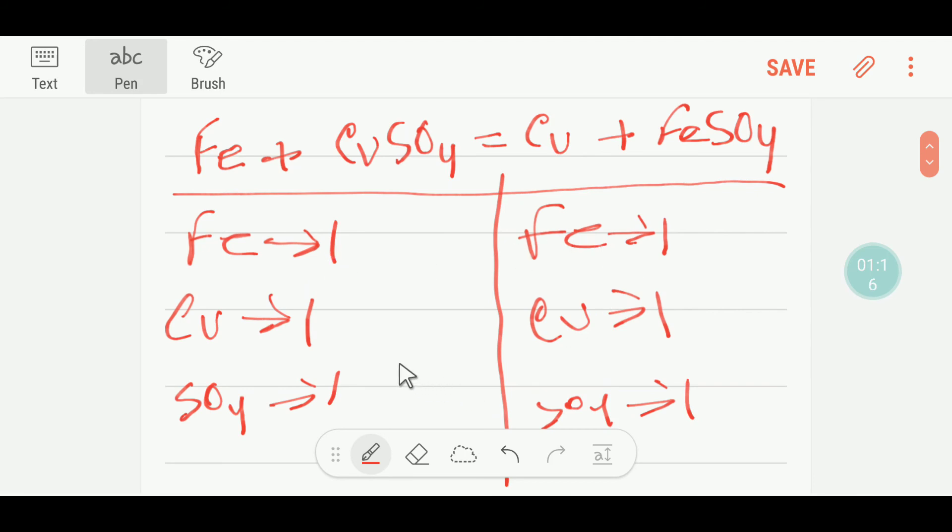So here we have one iron, one iron, one copper, one copper, one sulfate, one sulfate. So this is a balanced reaction. Thank you for viewing this video. Be well.